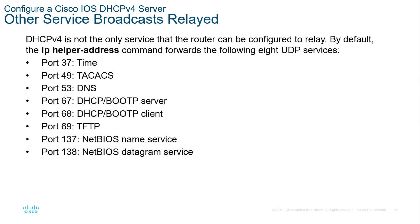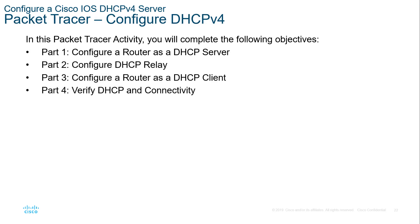The UDP services that need to be forwarded using a helper address include: NTP, TACACS, DNS, DHCP server/client, TFTP, NetBIOS name service, and NetBIOS datagram service. These all require IP helper addresses by default. There is a lab covering DHCP configuration for both the client and relay, as well as verification.